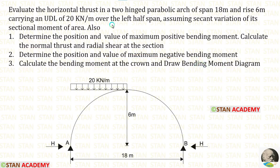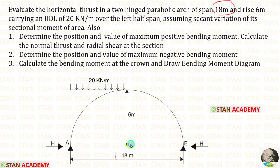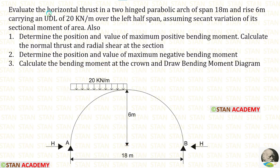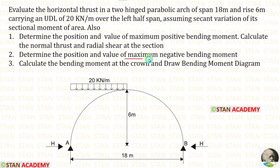Using the data available in the question, we can draw this diagram. The length of the arch is 18 metres and the rise is 6 metres. This arch carries a UDL of 20 kilonewton per metre on the left half span. In this question, we have to calculate the horizontal thrust, the maximum positive bending moment and its location, the maximum negative bending moment and its location, the bending moment at the crown, and draw the bending moment diagram.